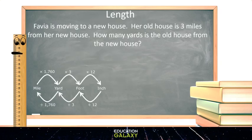Let's check out this linked problem. Favia is moving to a new house. Her old house is three miles from her new house. How many yards is the old house from the new house? Let's use this visual to help us. If we want to go from miles to yards, we need to multiply by 1,760.